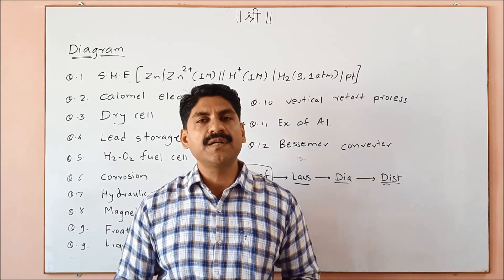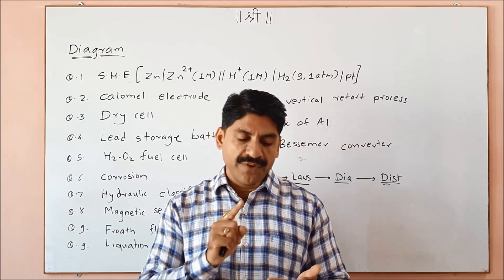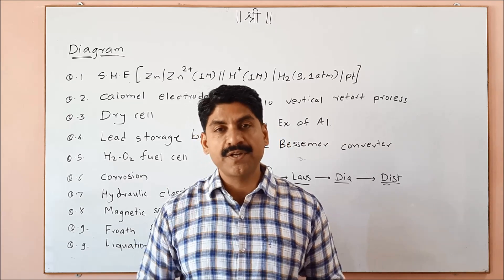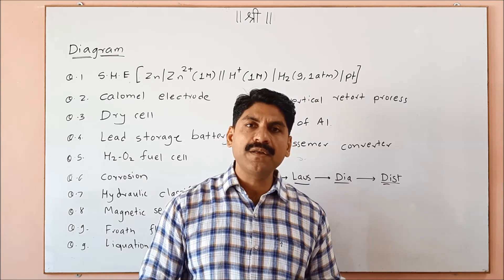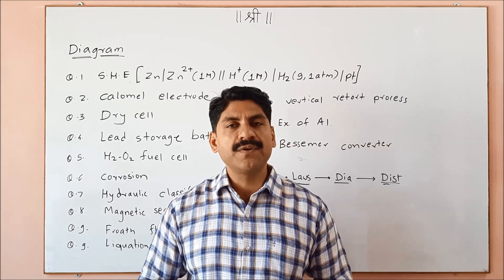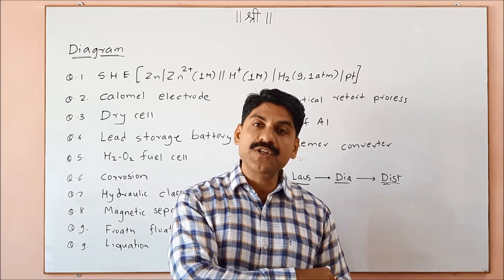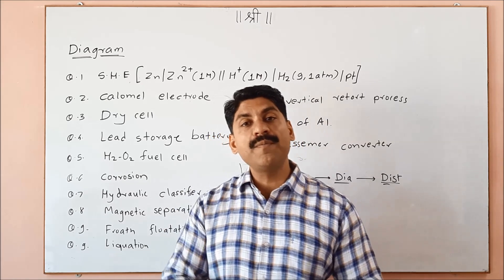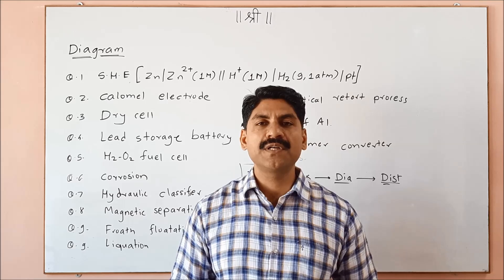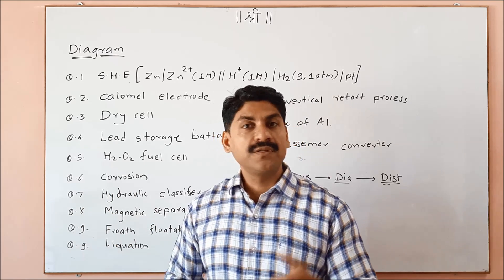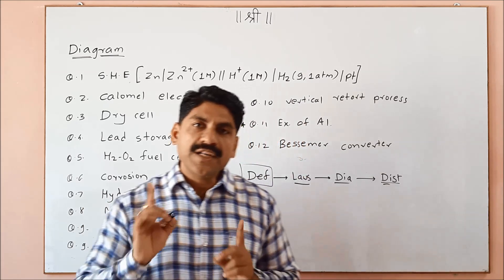In section 2: define alkyl halide and give classification; define alcohol and give classification; define ketone and give classification; define amine and give classification. Also, define electrochemical series and give its applications — this is an important question about state one-to-one applications.